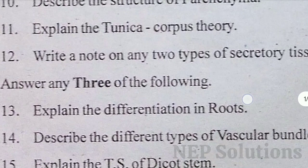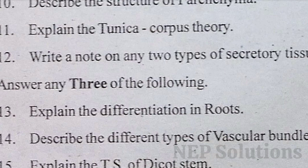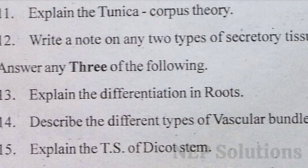The fourteenth question: describe the types of vascular bundles. As we know from ninth standard, there is xylem and phloem — phloem is the food conducting tissue and xylem is the water conducting tissue. Next, explain the TS of dicot stem, which we have to explain with a diagram.